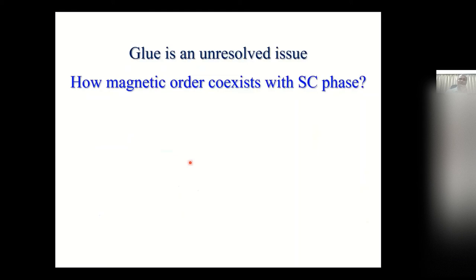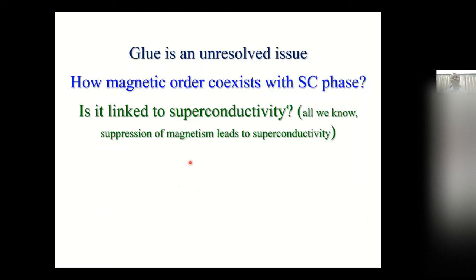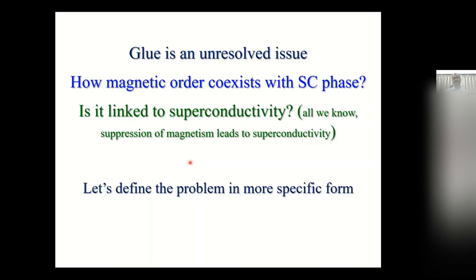Let's summarize the key questions. The glue — how the two electrons are paired — is an unresolved issue. But the problem is more complex: how does magnetic order coexist with the superconducting phase? Is it really linked to superconductivity? In most unconventional materials where electron-phonon coupling or BCS theory is not applicable, we know that if you suppress magnetic order you can get superconductivity. But there are some systems that show both coexisting. Let's look at the problem more critically, taking the example of iron arsenides.